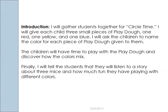Here's the anticipatory set or introduction. I will gather the students together for circle time. I will give each child three small pieces of Play-Doh — one red, one yellow, and one blue. I will ask the children to name the color for each piece of Play-Doh given to them. The children will have time to play with the Play-Doh and discover how the colors mix. Finally, I will tell the students that they will listen to a story about three mice and how much fun they have playing with different colors.